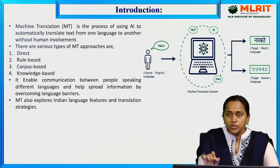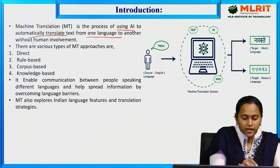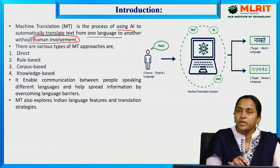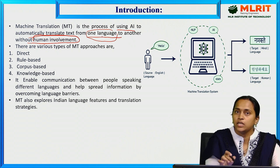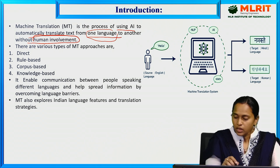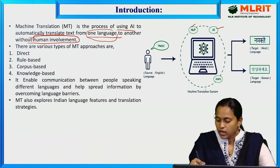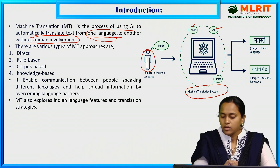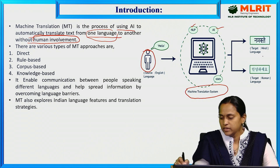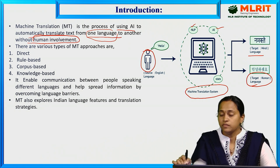Coming to the introduction: machine translation is a process of using AI to automatically translate text from one language to another without human involvement. It automatically translates — for example, Telugu to English, English to Hindi, or English to Telugu, Tamil, Sanskrit, and so on. This evaluation diagram shows the machine translation system used in natural language and AI. For instance, the human says 'hello,' and it automatically translates into Hindi as 'Namaste' and into Korean language.